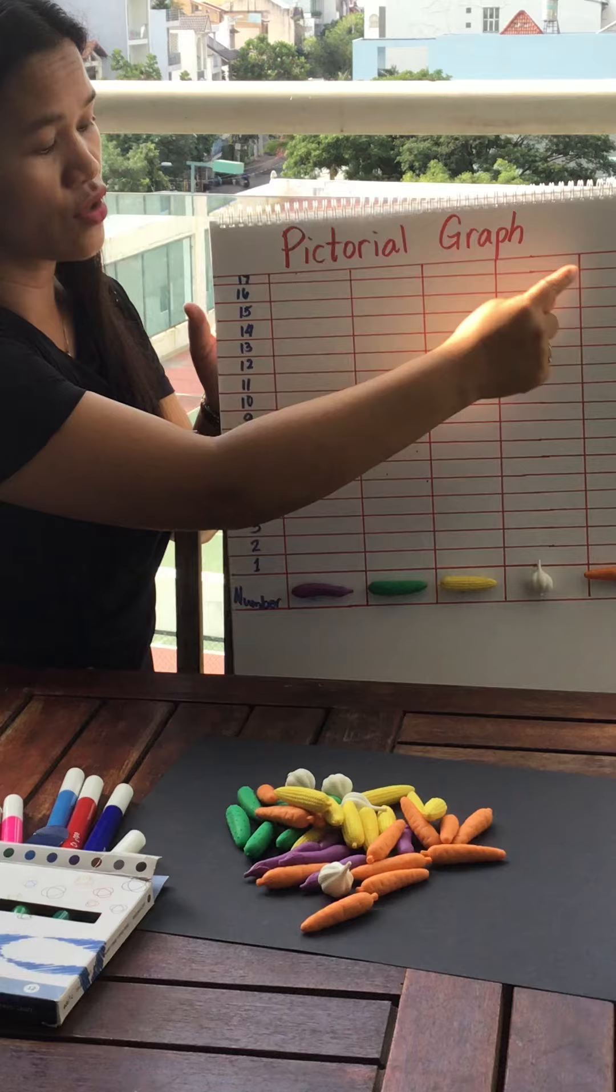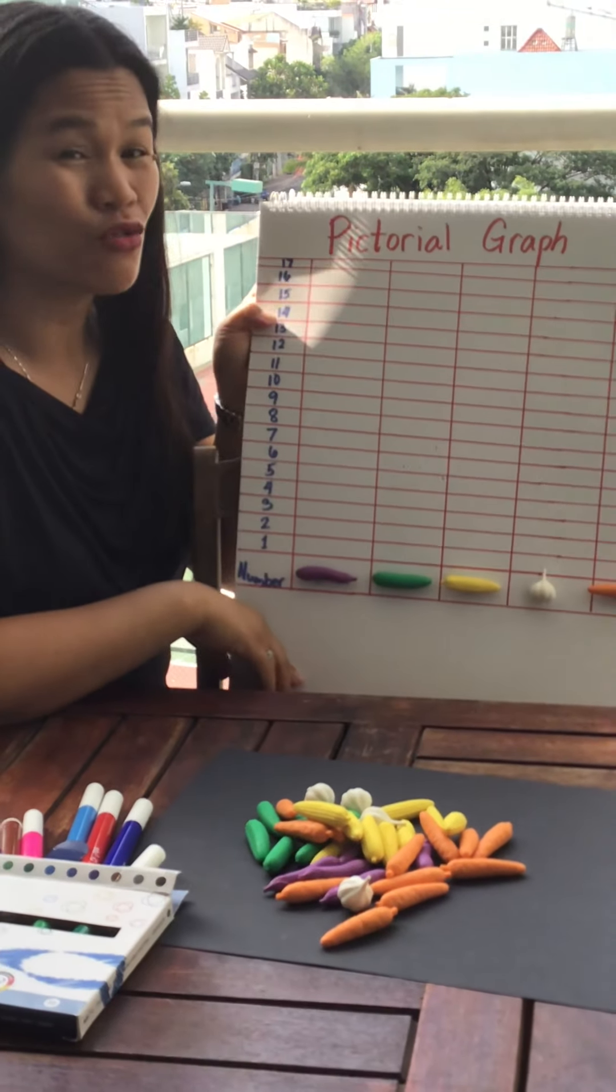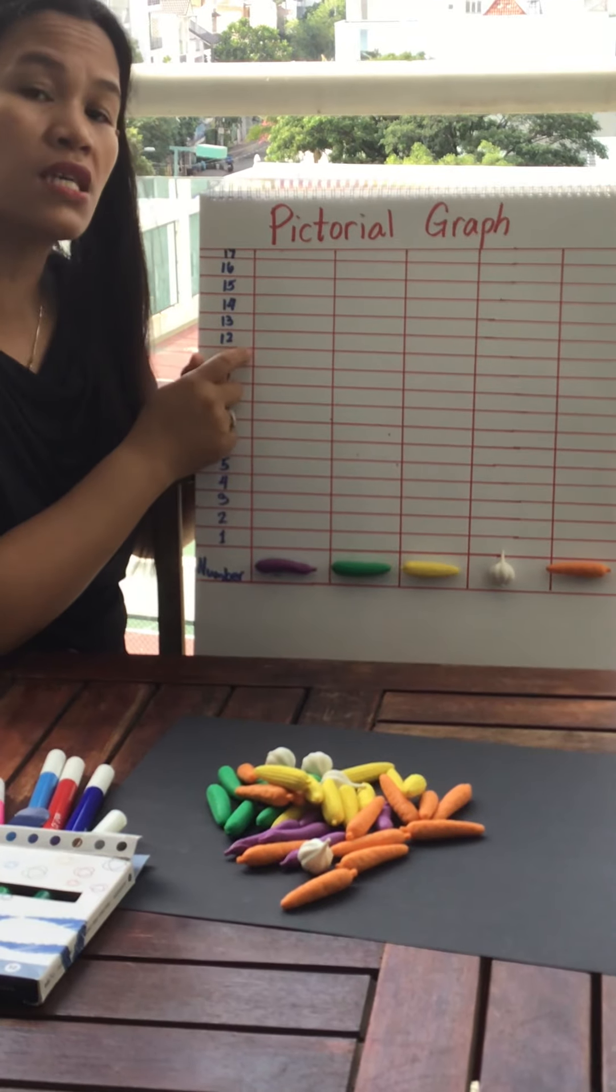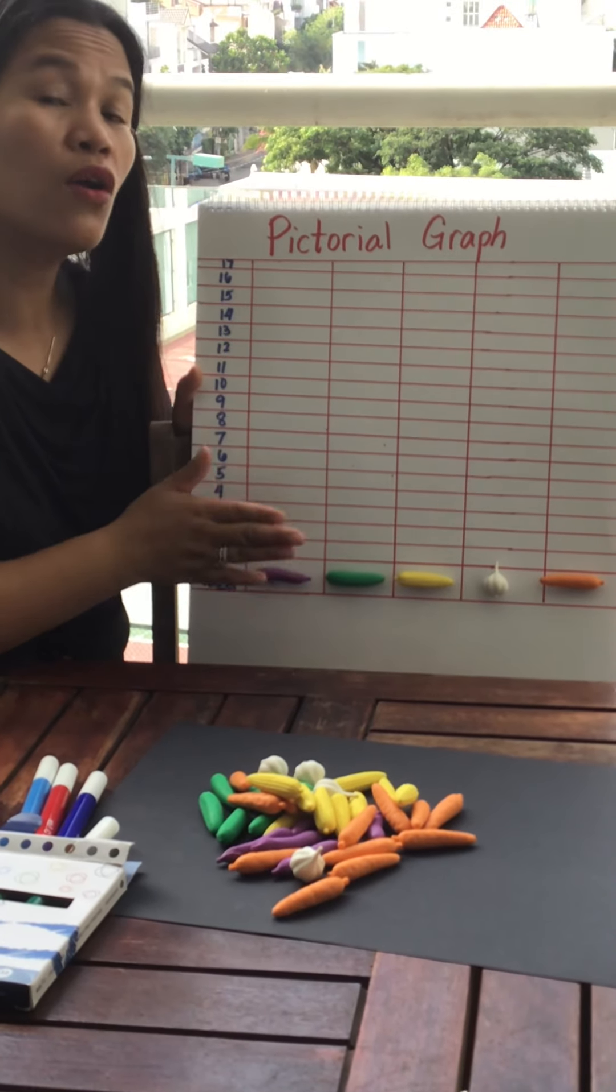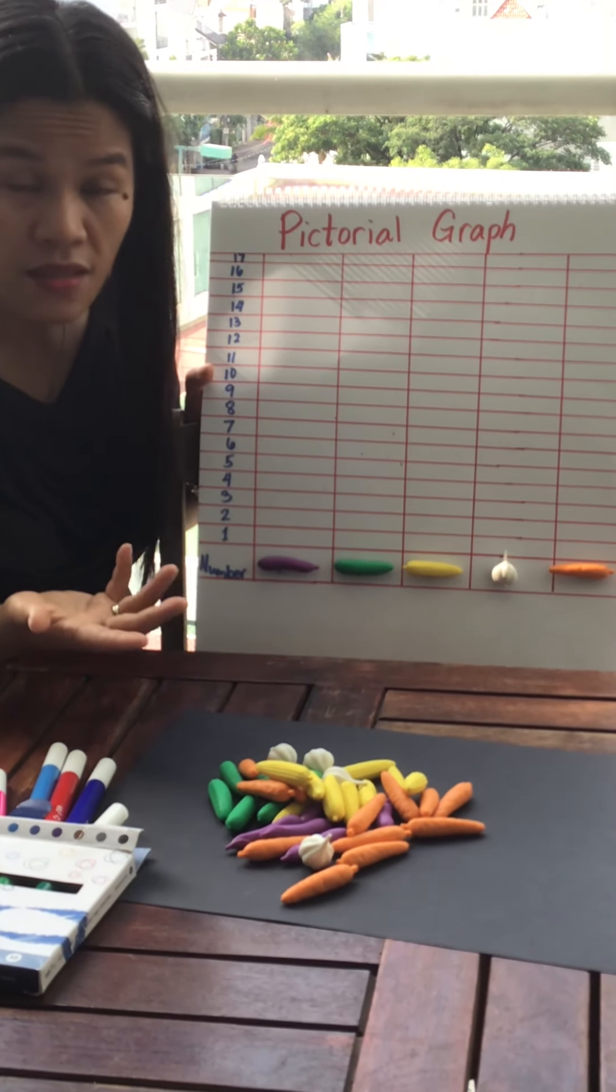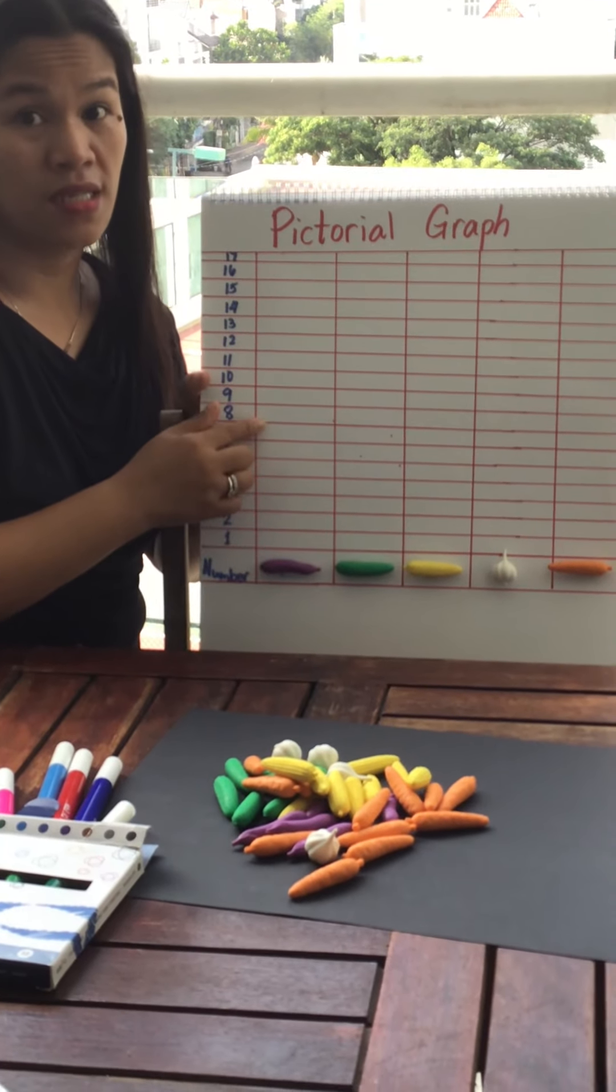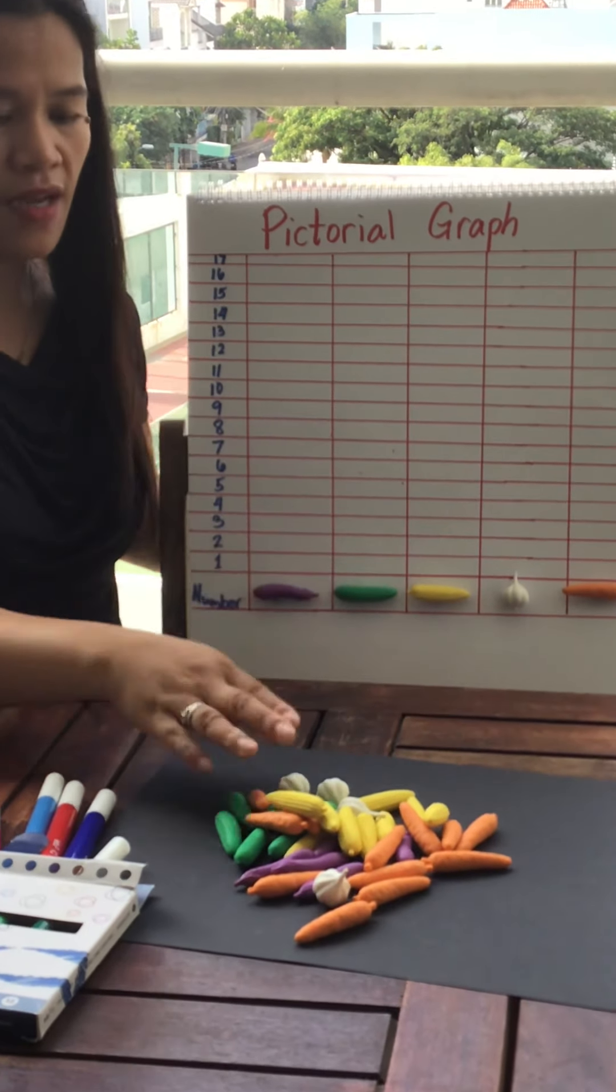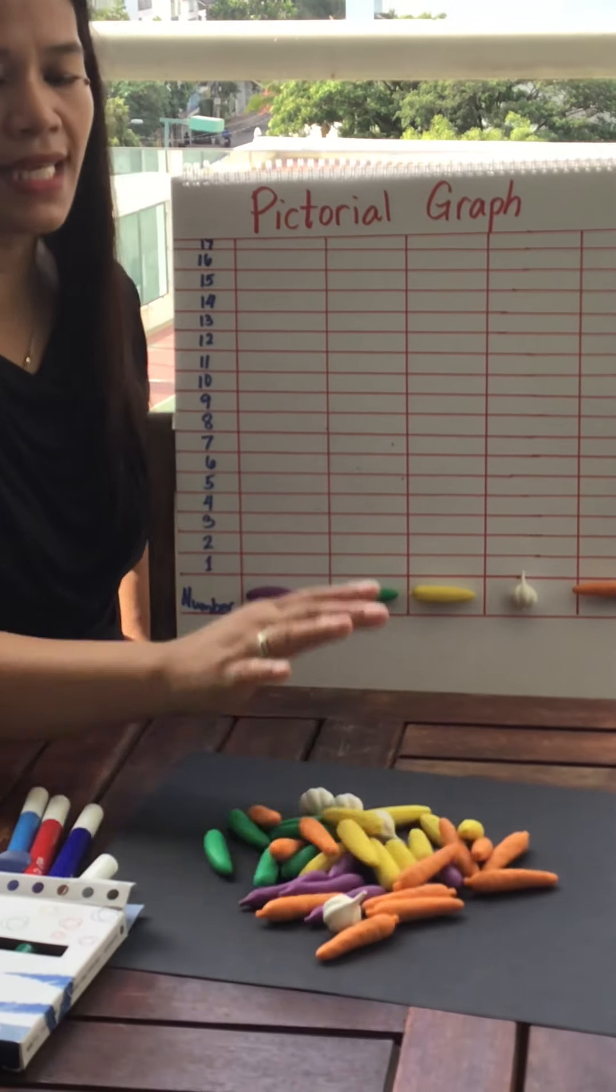We are going to make pictorial graph, so you are going to count and see how many are the objects using pictures. For example, I have lots of vegetables right here.